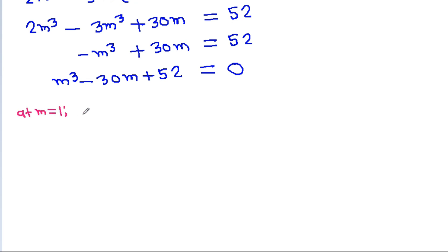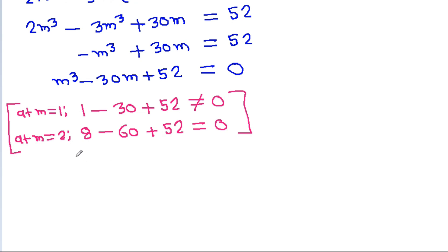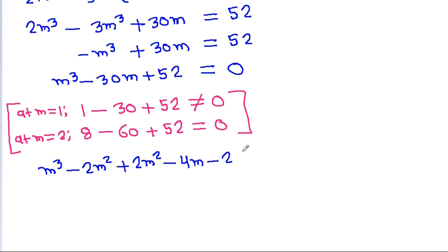Testing m = 2: 2³ - 30(2) + 52 = 8 - 60 + 52 = 0. So m = 2 works, meaning (m - 2) is a factor. Performing polynomial division: m³ - 30m + 52 = m³ - 2m² + 2m² - 4m - 26m + 52 = 0.